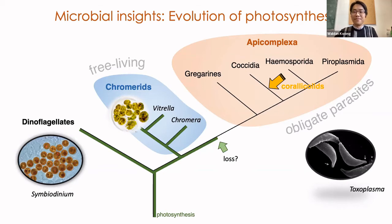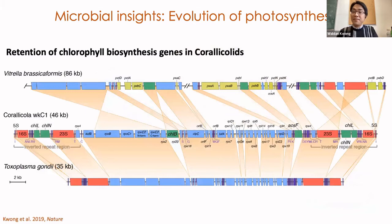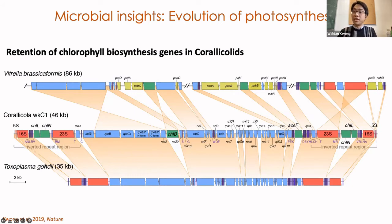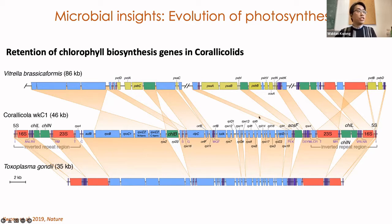So how does Corallicolida fit into this? We sequenced the genome of its plastid — the remnants of chloroplasts in Apicomplexans. Comparing a gene map of Chromera, a photosynthetic relative, with Corallicolida and Toxoplasma gondii, an obligate parasite: in blue are ribosomal and other housekeeping genes; in yellow are photosystems, which are lost in Corallicolida and Toxoplasma but retained in Chromera. But here in green are four ancestrally encoded genes for chlorophyll biosynthesis — obviously lost in Toxoplasma, but surprisingly retained in Corallicolida. This is the first known instance of these genes being present in what appears to be a non-photosynthetic organism.